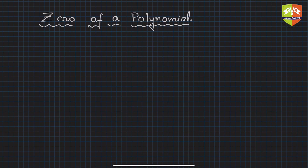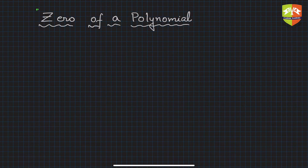Hello and welcome to another session on polynomials. In this session we are going to understand what a zero of a polynomial is. You must be wondering — zero of a polynomial, what does that even mean? When I encountered this statement I was feeling the same, but don't worry. In the last session, if you recollect, we studied something called value of a polynomial.